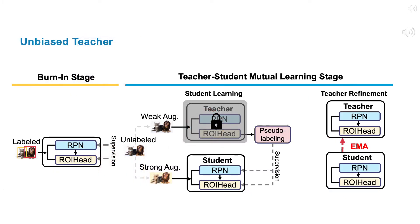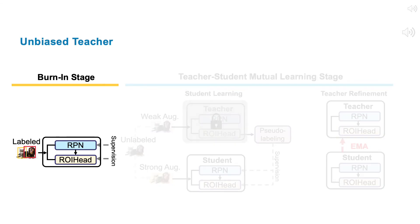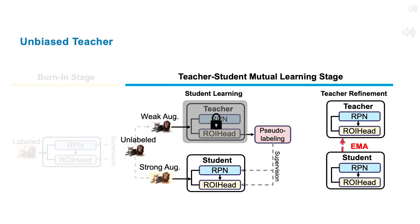We thus propose a general framework called Unbiased Teacher that jointly trains a student and a teacher in a mutually beneficial manner. Our framework contains two training stages: burn-in stage and teacher-student mutual learning stage.